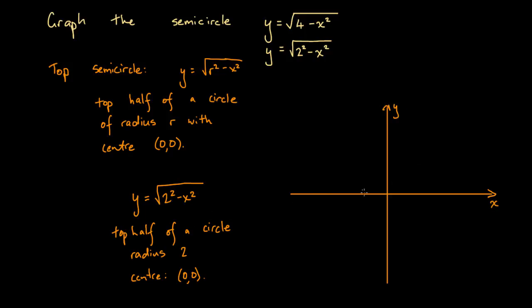and we're going to draw the top half of a circle. So we'll say that this is minus 2, minus 1, this is 1, this is 2, here this is 1, this is 2.